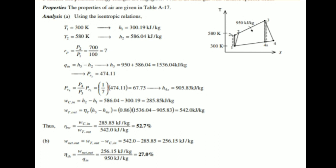One over 7 multiplied by 474.11 is equal to 67.73. And we have H4 is equal to 905.83 kilojoules per kilogram.